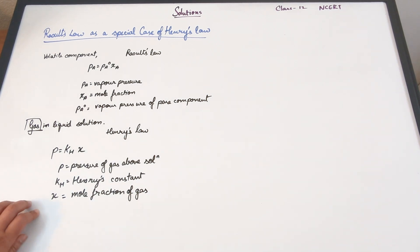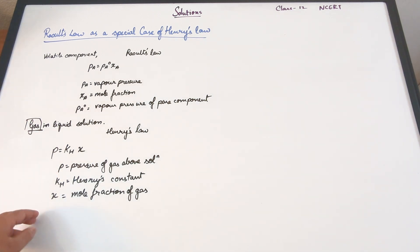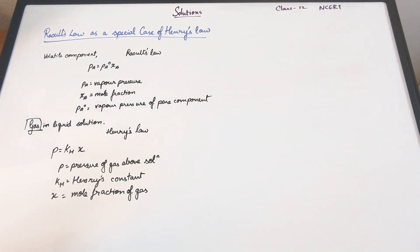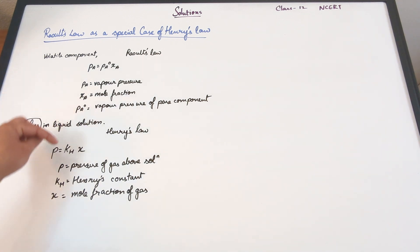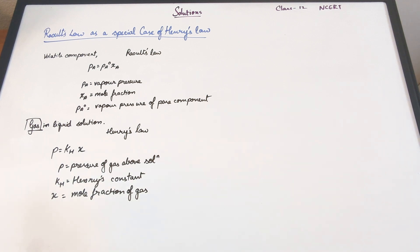If you notice, pressure in both cases is in proportion to the mole fraction. The constants are the only ones which are different — PA0 is the vapor pressure of the pure component and KH is the Henry's constant. So when you compare Raoult's law and Henry's law, the only difference between these two laws is that here we use PA0 as the proportionality constant for Raoult's law, and the Henry's constant for Henry's law.